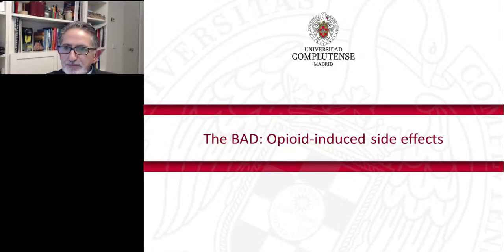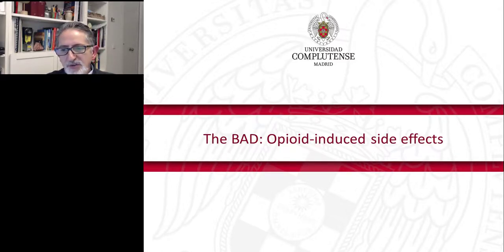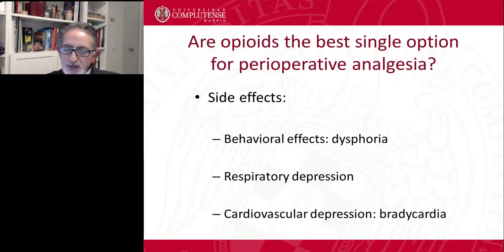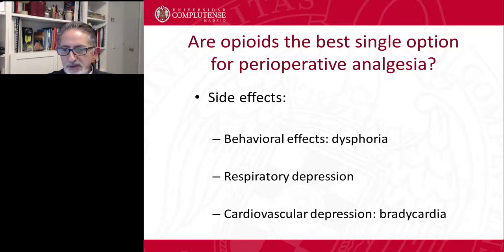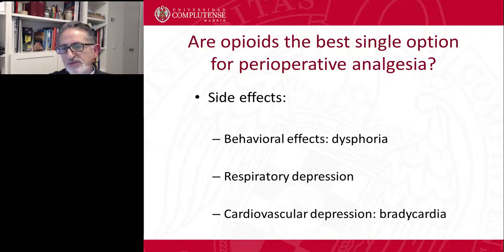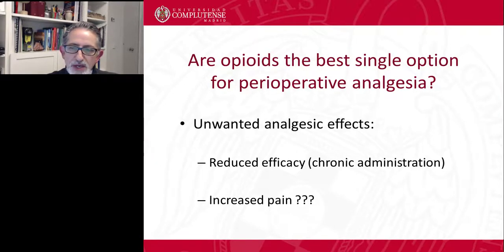I would like to show you other effects recently found from the use mainly of opioids. Usually opioids may produce behavioral effects, respiratory depression — especially in humans — and cardiovascular depression. For example, bradycardia and at some points hypertension may appear after a dose of fentanyl or methadone. However, recently there is more evidence telling us that there are also unwanted analgesic effects — first, because of reduced efficacy of the drugs, mainly by chronic administration.